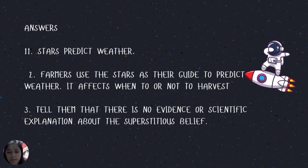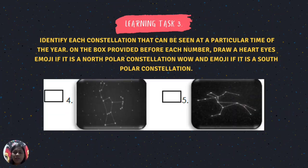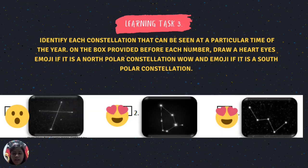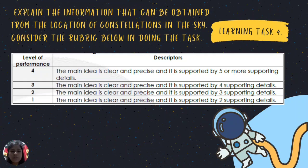For Learning Task Number 3: identify each constellation that can be seen at a particular time of the year. On the box provided before each number, draw a heart-eyes emoji if it is a north polar constellation and a wow emoji if it is a south polar constellation. The correct answers are: number 1 — wow emoji; number 2 — heart emoji; number 3 — heart emoji; number 4 — heart emoji; number 5 — wow emoji.